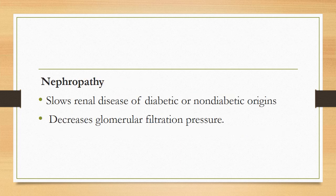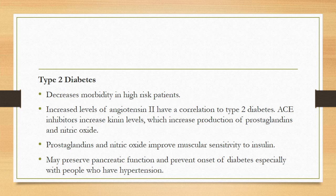They are also used in nephropathy — they lower renal disease of diabetic or non-diabetic origins by decreasing glomerular filtration pressure. They are used in type 2 diabetes to decrease morbidity in high-risk patients. Increased levels of angiotensin 2 correlate to type 2 diabetes. ACE inhibitors increase kinin levels, which increase prostaglandins and nitric oxide, improving muscular sensitivity to insulin, potentially preserving pancreatic function and preventing onset of diabetes especially in people with hypertension.